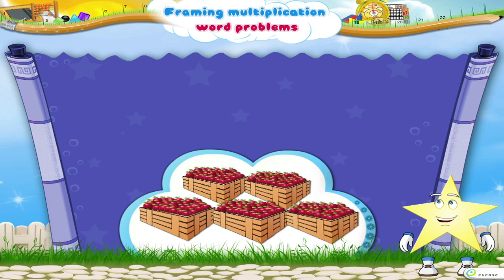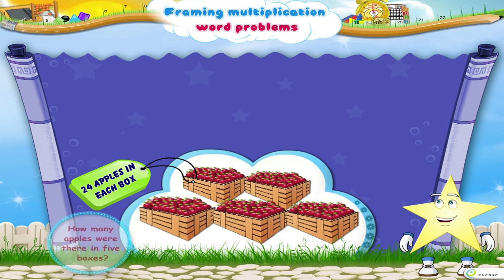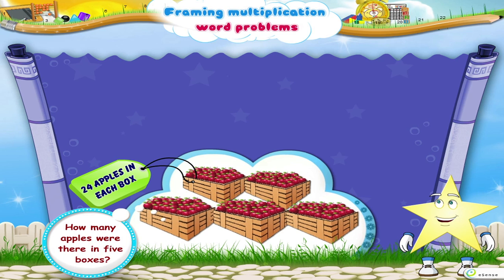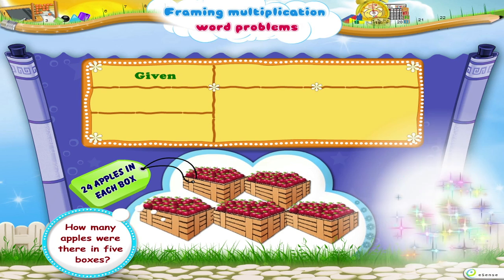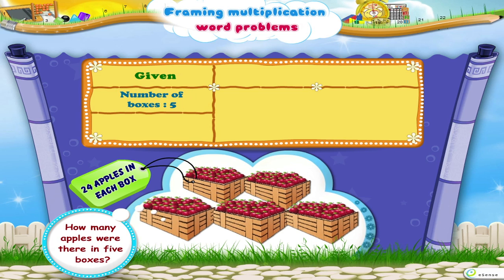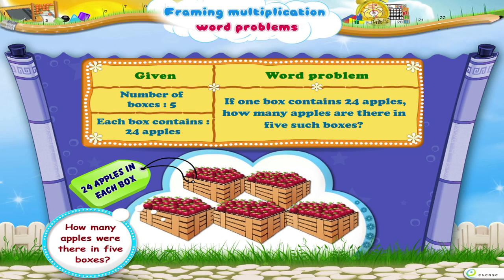Look how neatly these apples are packed into boxes. There are 24 apples in each box. Starry, what would your word problem be if we wanted to find out how many apples were there in 5 boxes? The information given is that there are 5 boxes and each box contains 24 apples. The word problem is: one box contains 24 apples. How many apples are there in 5 boxes?